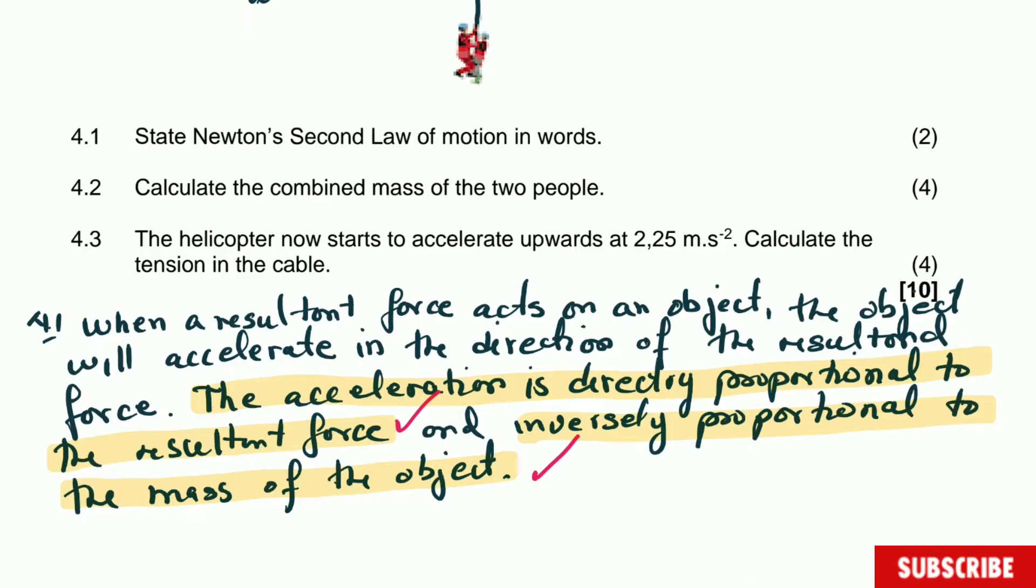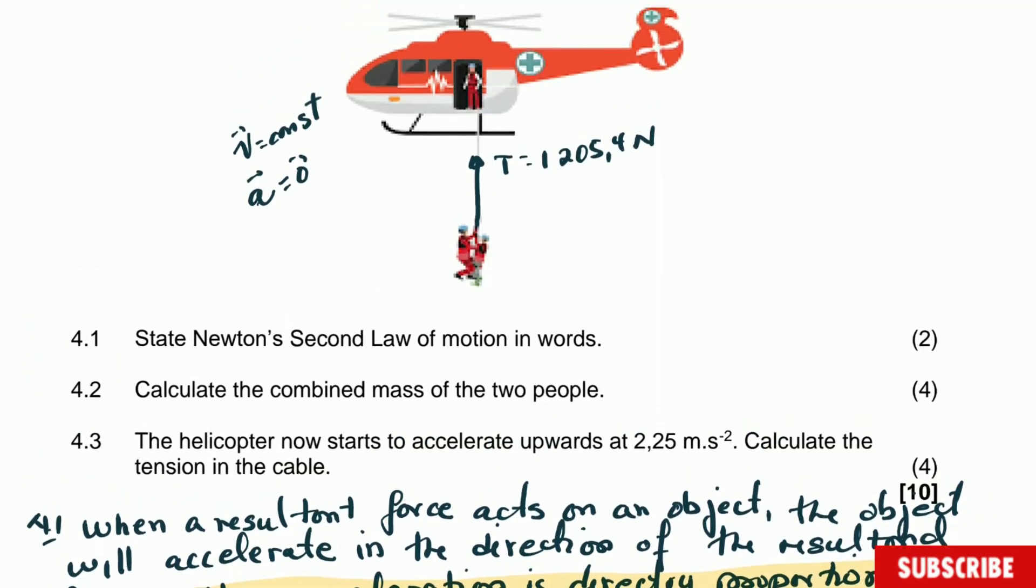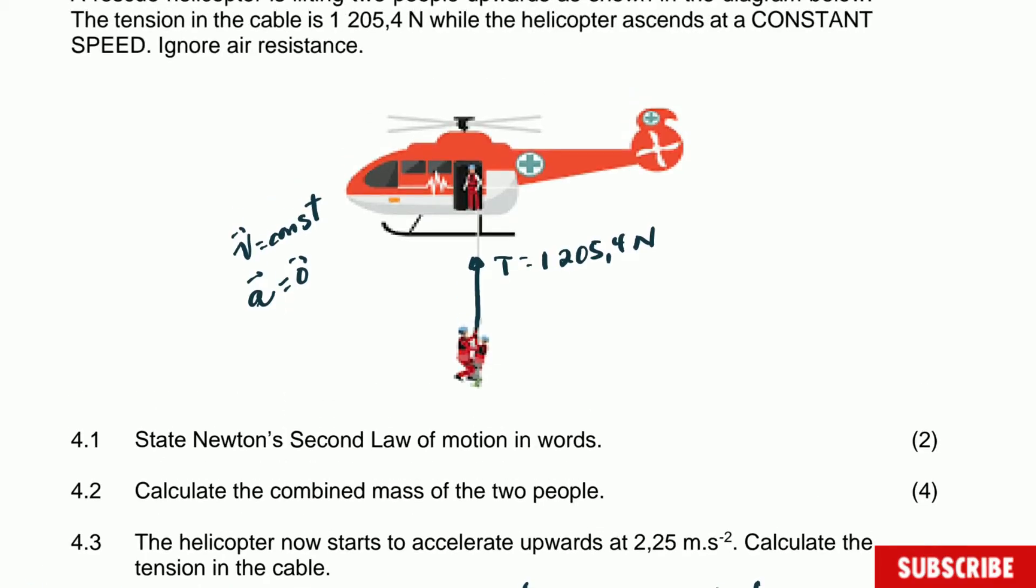Question 4.2: Calculate the combined mass of the two people. To do that, the first thing we're going to do is draw the free body diagram of all the forces acting on those people hanging in the cable of the helicopter. In this case, the object is moving upward, so there is only the y-axis. The forces acting on these people are tension pointing upward and weight pointing downward. Because the object is moving upward, we are going to take upward as positive.